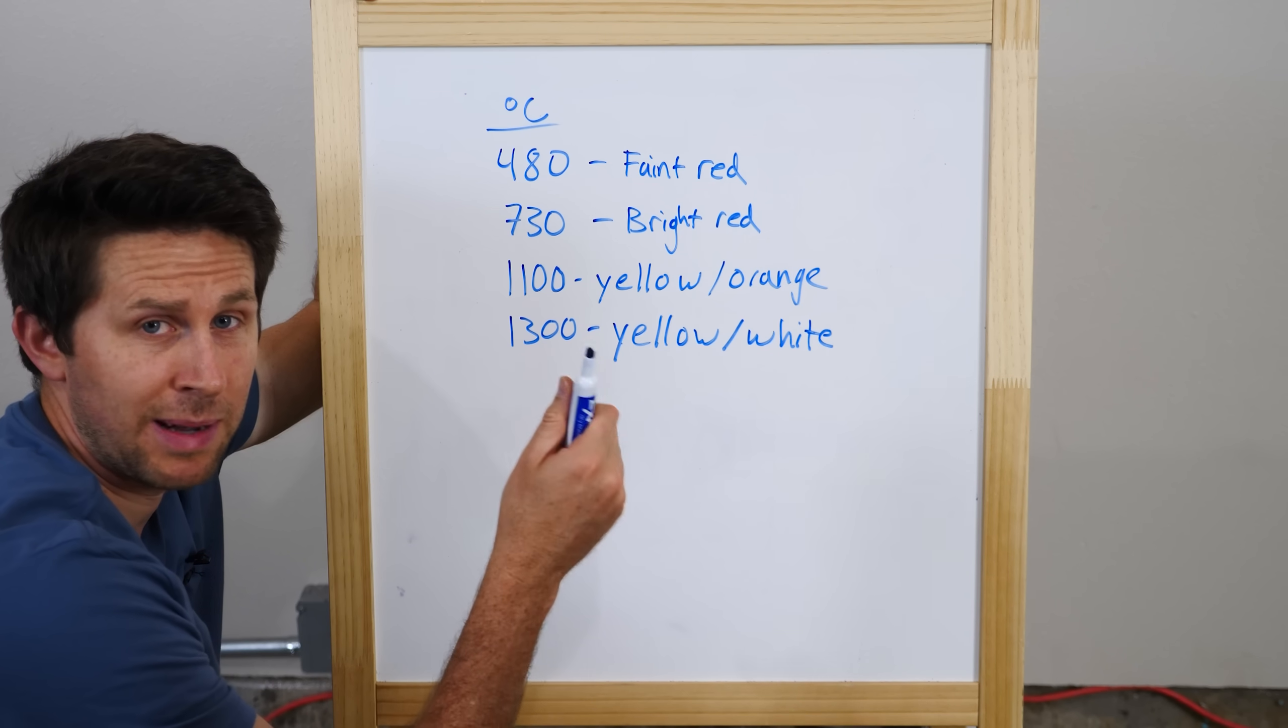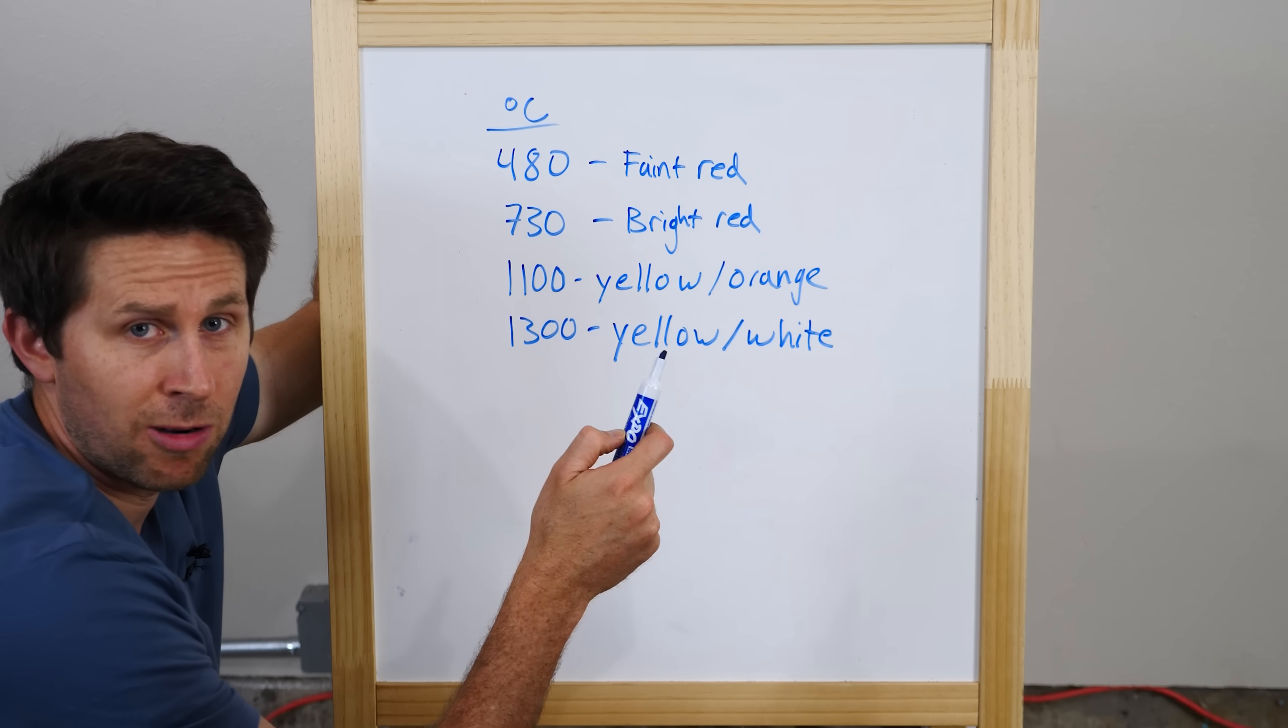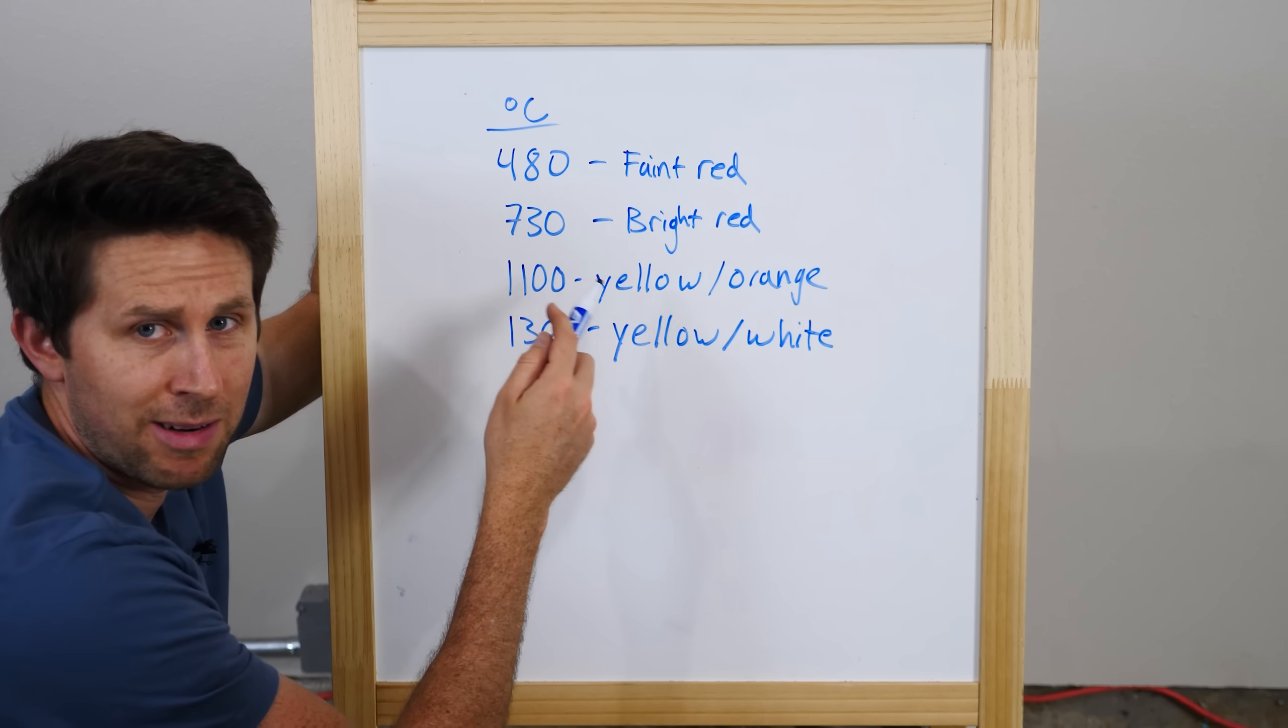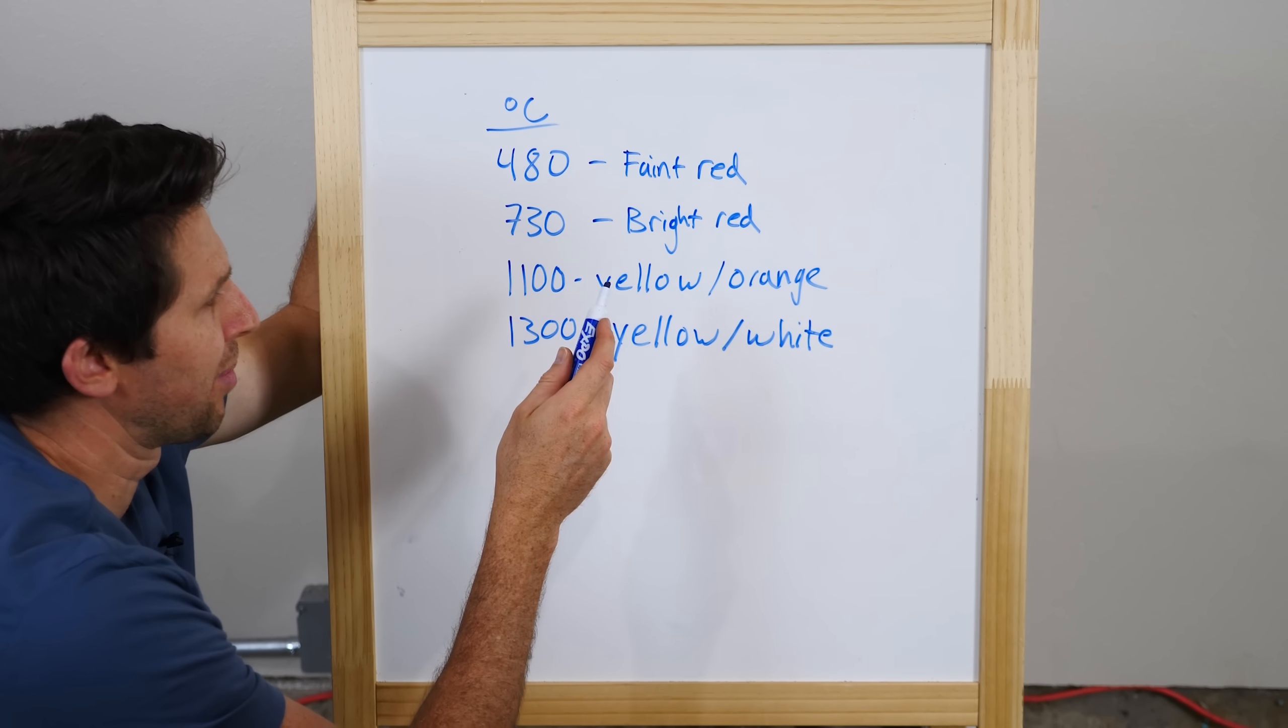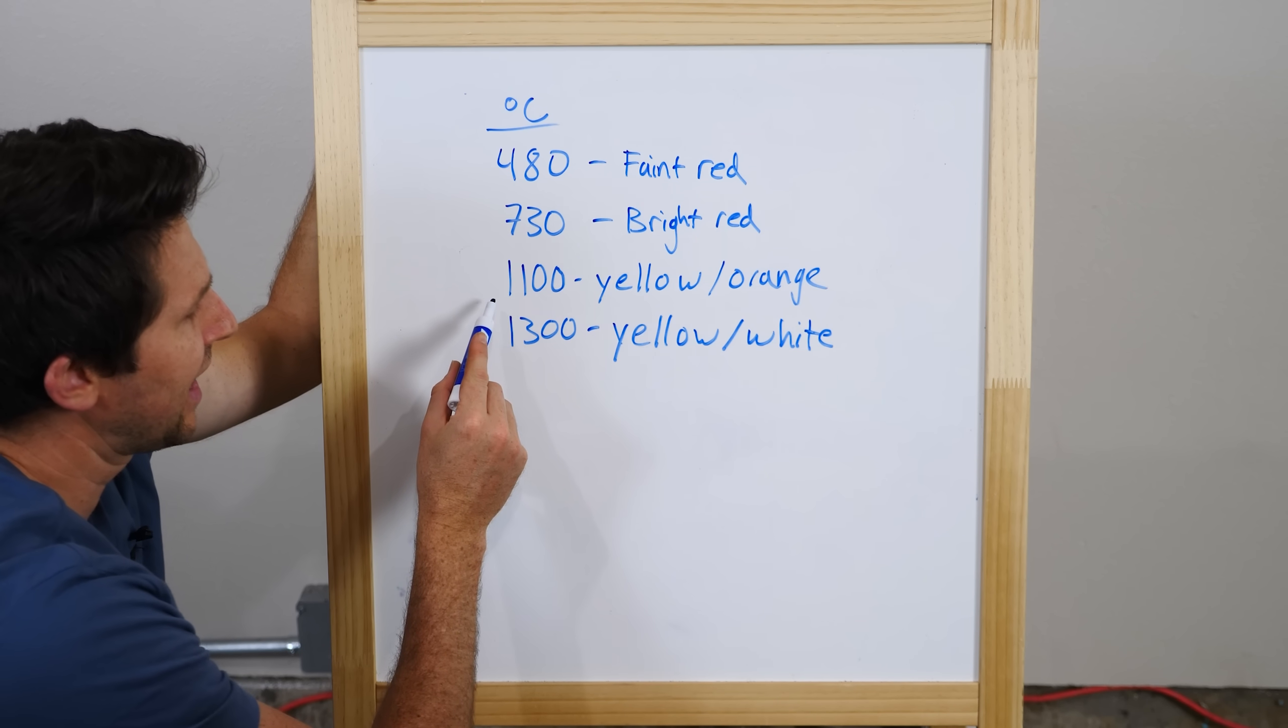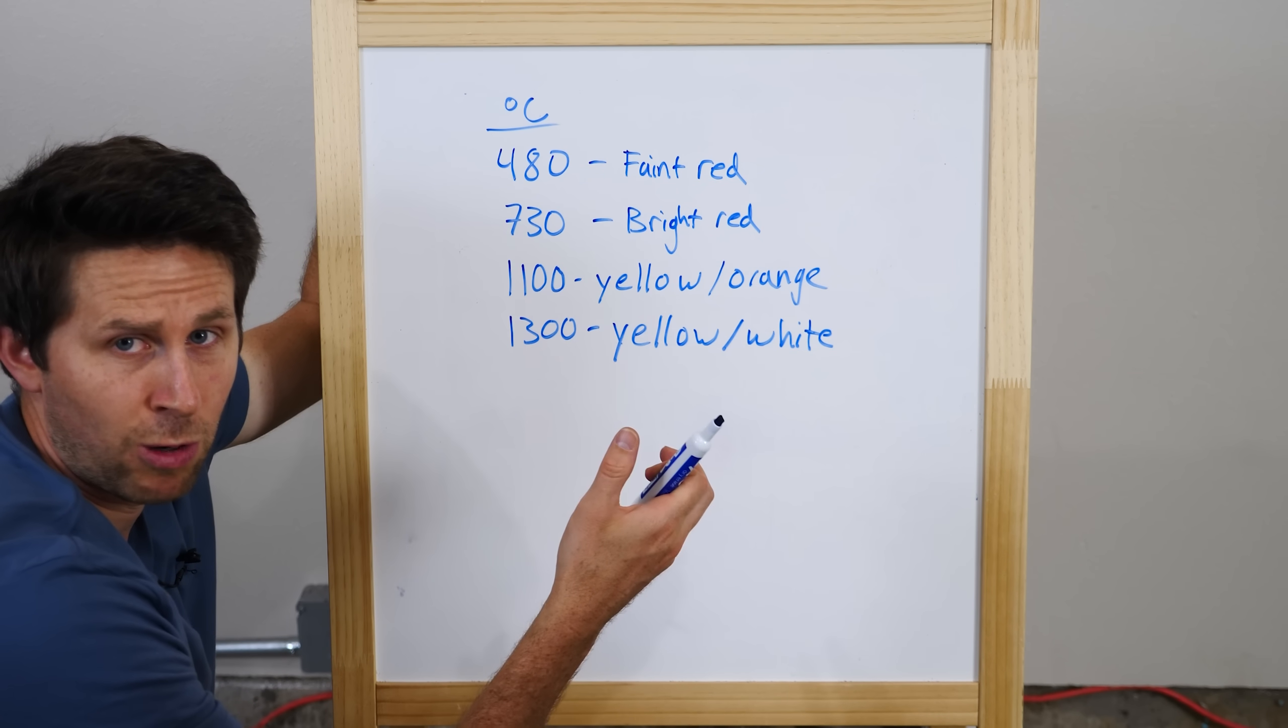It turns out that no matter what your black body is made out of, if you heat it up, it will always glow at the same temperatures. Now I wasn't able to get mine to a very high temperature. I probably got it to around 700 degrees Celsius. But if I could get it to a higher temperature, then it wouldn't just glow bright red anymore, but it would actually start to glow yellow and orange. And if I heat it up even more to around 1300 degrees Celsius, then it would become yellowish white.